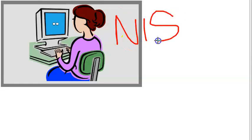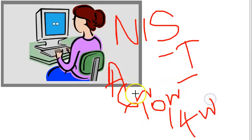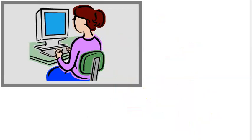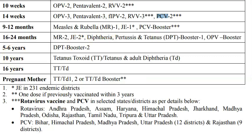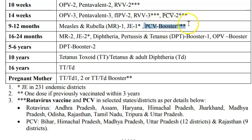Moving on to 9 to 12 months: the measles-rubella (MR) vaccine is given as the first dose. Japanese encephalitis vaccine is given only in endemic districts, and pneumococcal conjugate vaccine booster is given only in selected states.